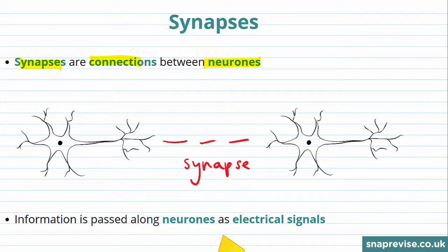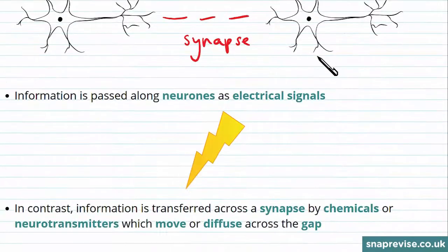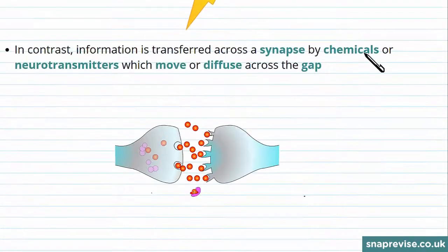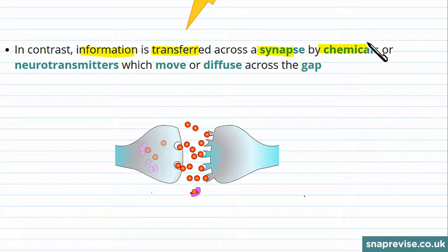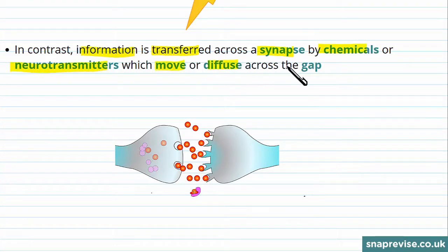Neurons are really important as information is passed along them as electrical signals. In contrast, information is transferred across the synapse by chemicals or neurotransmitters, and these move or diffuse across the gap between neurons.